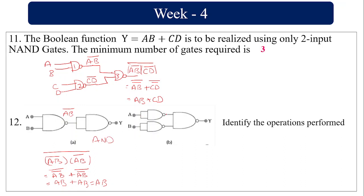In the other part of the circuit: input a goes into a NAND gate with itself giving ā, and input b goes into a NAND gate with itself giving b̄. Then ā and b̄ go into a NAND gate: (ā·b̄)' = a + b by De Morgan's theorem. This is nothing but the OR gate operation.